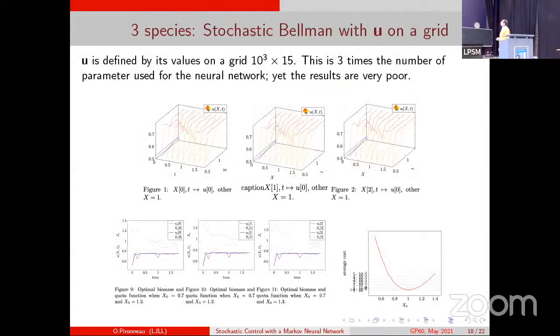Now, I try something else. Instead of using a neural network, I discretize my control on the finite difference mesh. It's terrible. It just doesn't work. So, neural network is not a bad idea for the representation of unknown function.